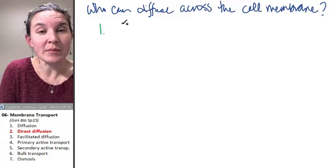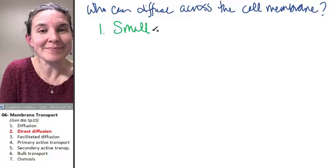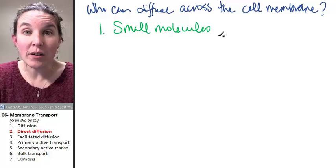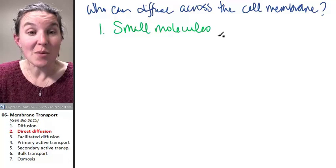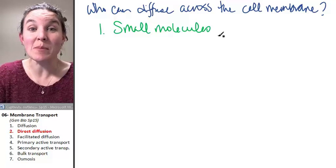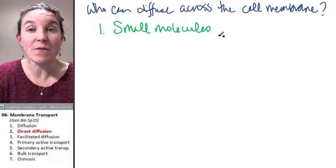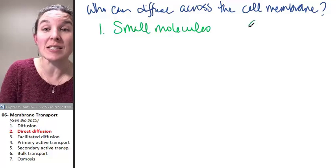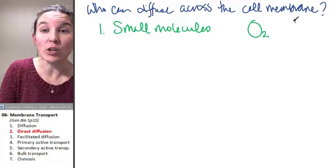Number one, little guys. The smaller the molecule, the more likely it is going to be able to directly diffuse across the cell membrane. I'm going to give you an example of a couple of small molecules.